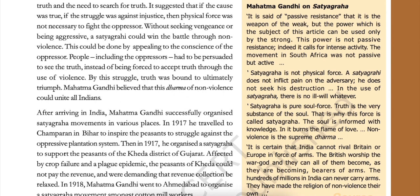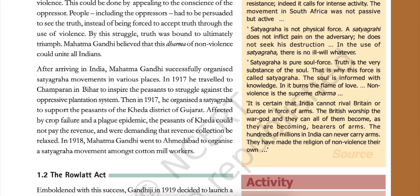After arriving in India, Mahatma Gandhi successfully organized Satyagraha movements in various places. In 1917, he traveled to Champaran in Bihar to inspire the peasants to struggle against the oppressive plantation system. Then in 1917, he organized a Satyagraha to support the peasants of Khera district of Gujarat. Affected by crop failure and a plague epidemic, the peasants of Khera could not pay the revenue and were demanding that revenue collection be relaxed. In 1918, Mahatma Gandhi went to Ahmedabad to organize a Satyagraha movement amongst cotton mill workers.